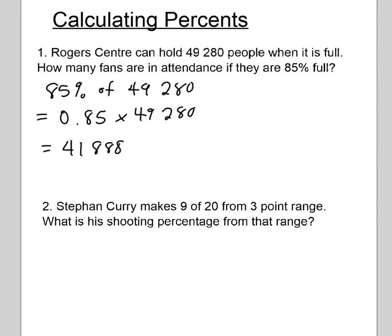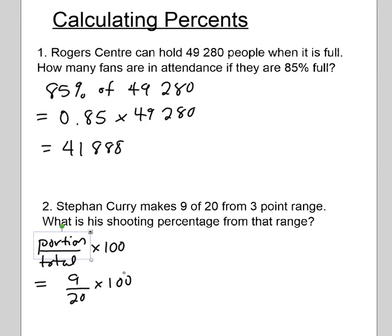Here's another sports stat: Stephen Curry for the Golden State Warriors makes 9 out of 20 from three-point range. How does a coach know if he's doing a good job? What's his shooting percentage? When calculating a percent, you always want to think in terms of: portion divided by total, times a hundred. That's the formula you'll always use. In this case, the portion he made was 9, the total he took was 20, times 100.